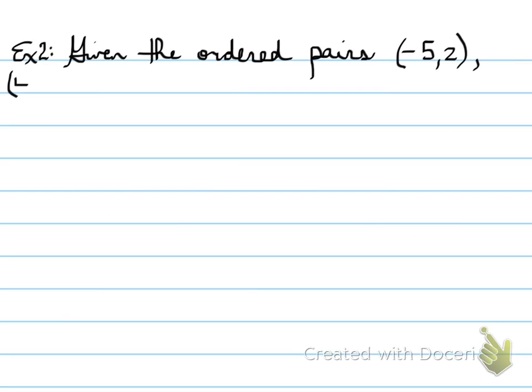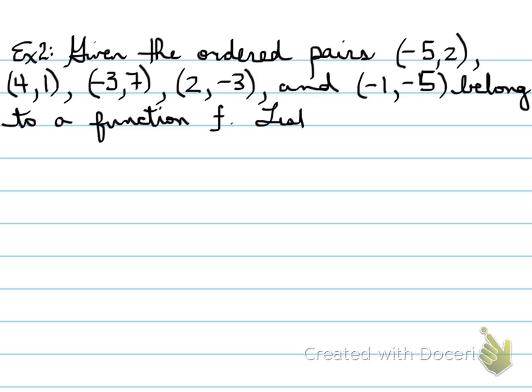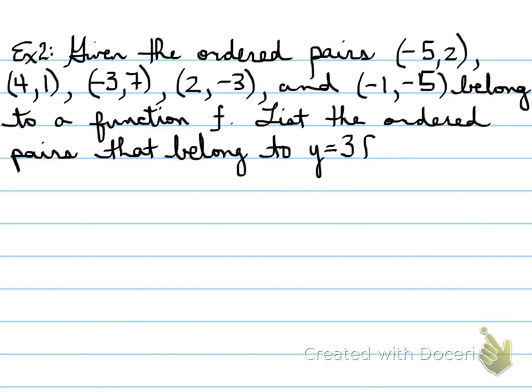Given the ordered pairs (-5, 2), (4, 1), (-3, 7), (2, -3), (-1, -5) belong to a function f. List the ordered pairs that belong to the following transformation. What this is saying is that, if you're given these ordered pairs, assume that these belong to a basic function. You're given these coordinates, and you're to transform them according to this.